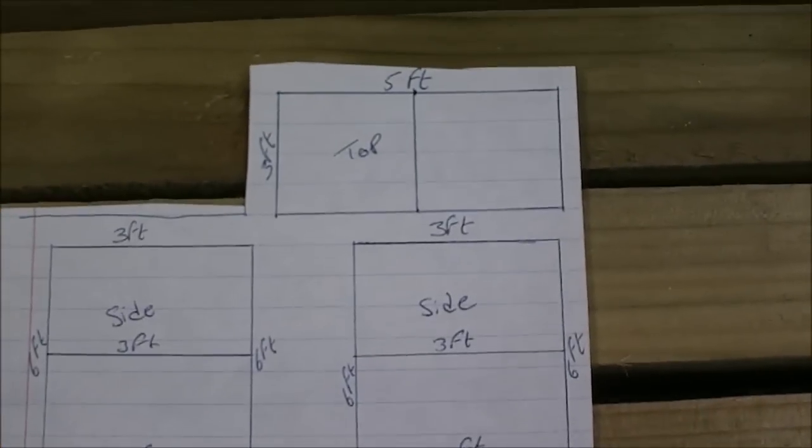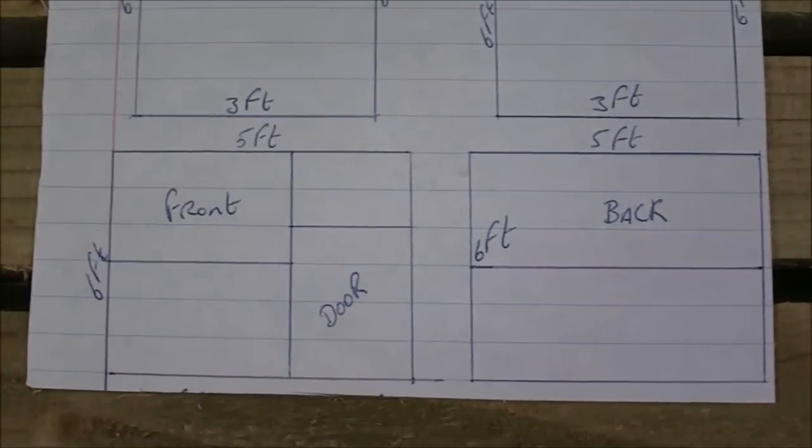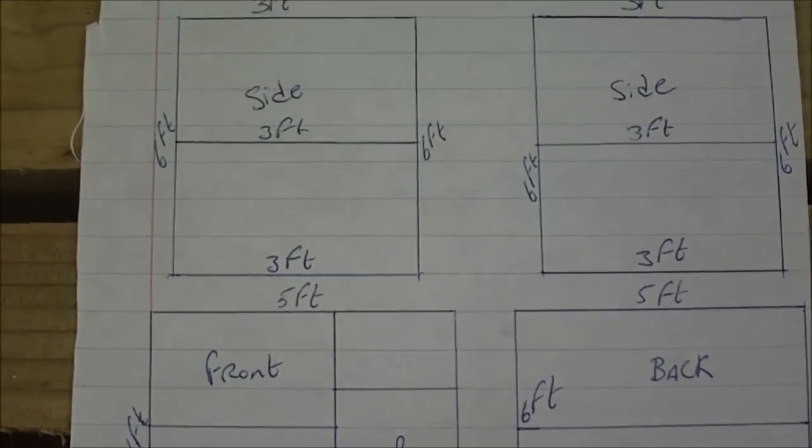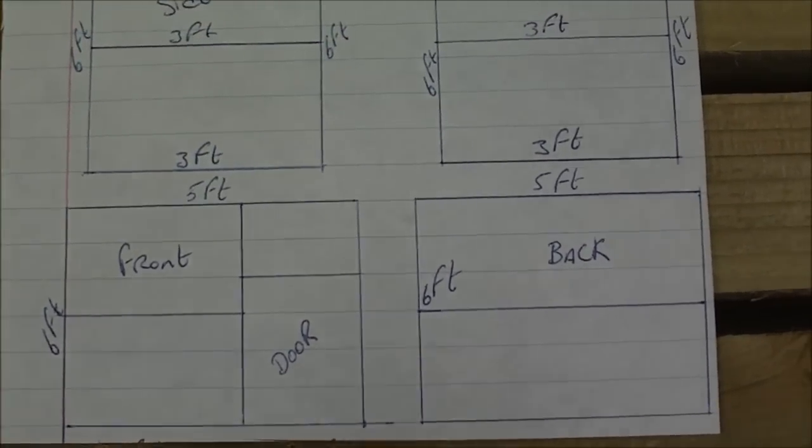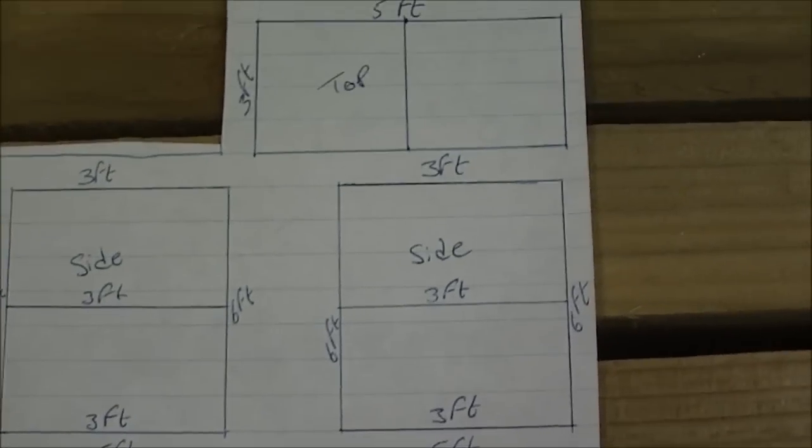So what I've done first is I've done a basic drawing of the aviary. It's going to be 6 foot high, 5 foot long, 3 foot wide. By doing the drawing it's a lot easier to calculate how much timber I need.